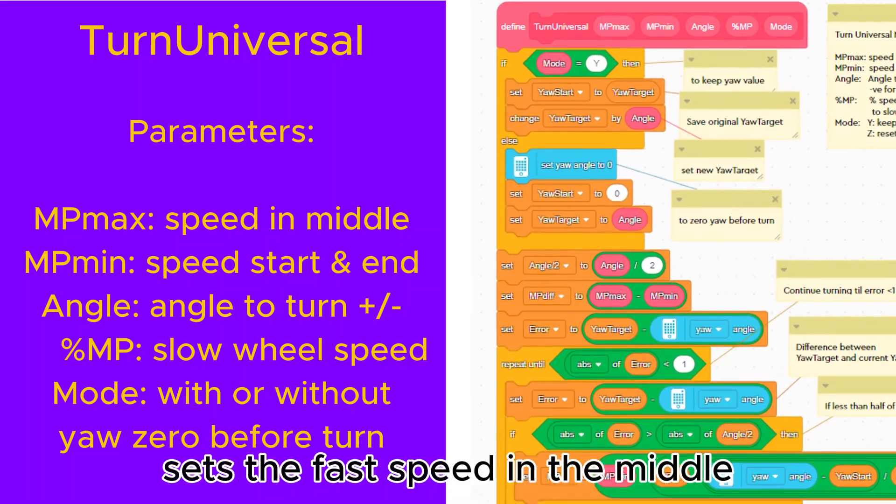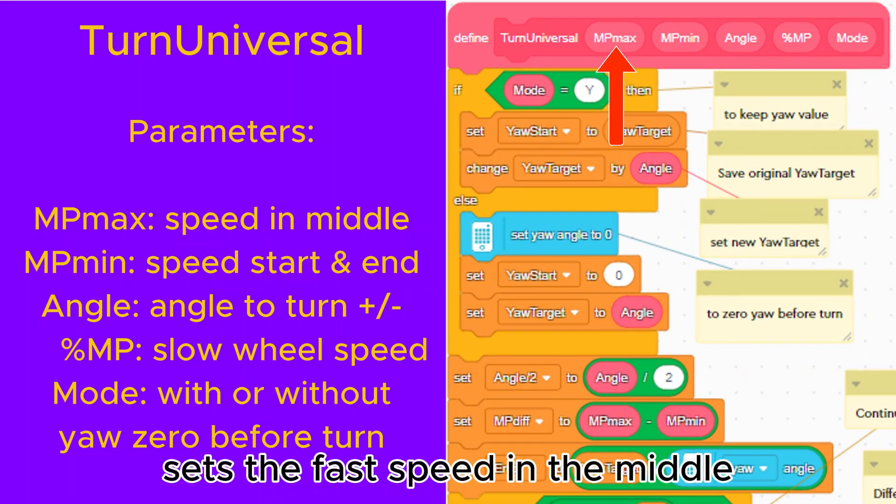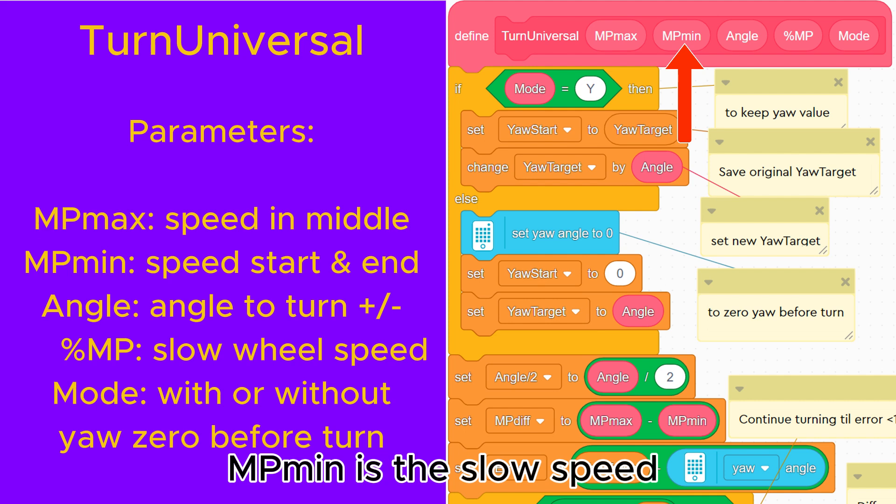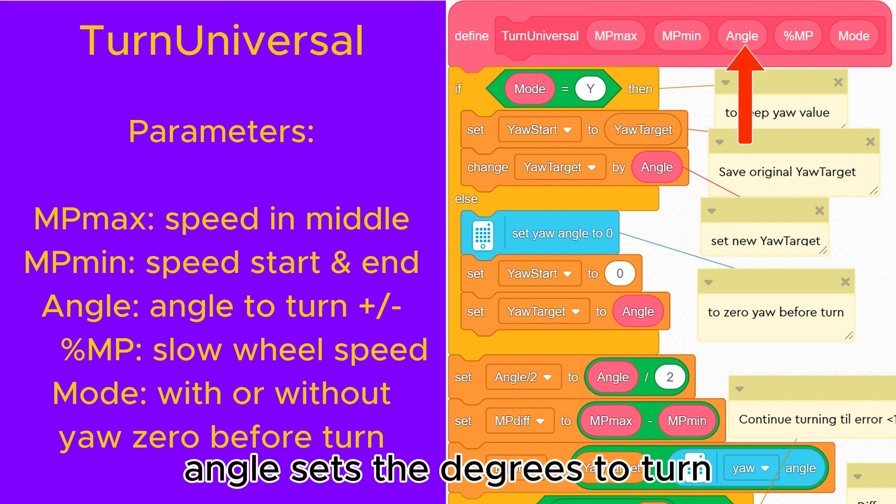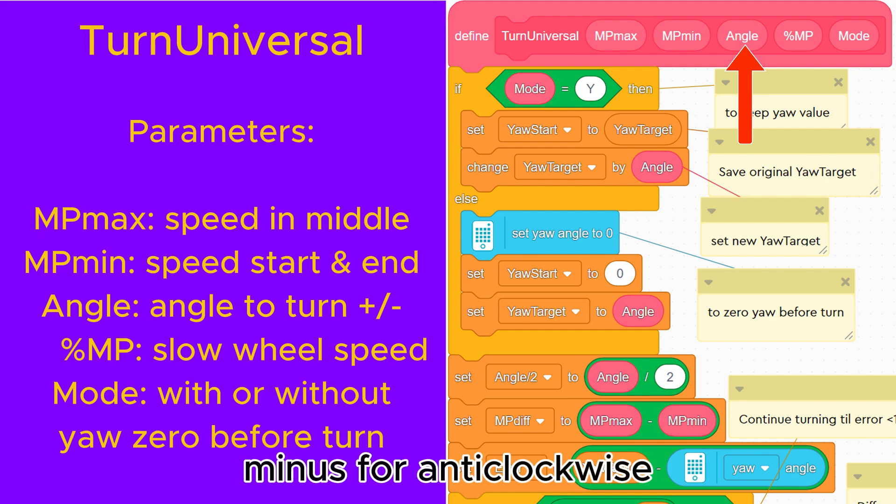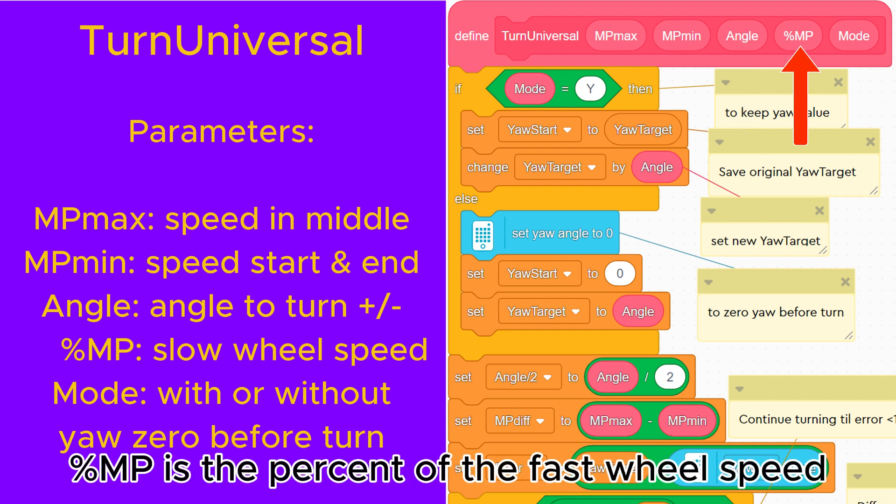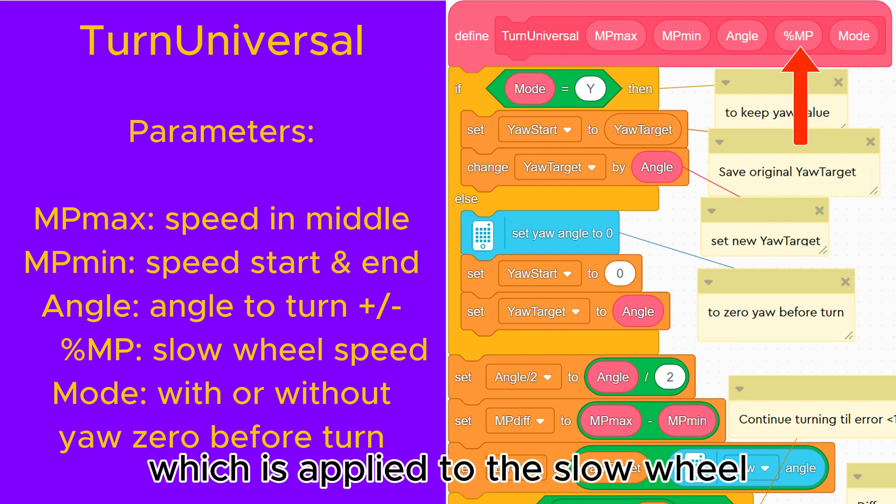The parameter MP max sets the fast speed in the middle. MP min is the slow speed at the start and end. Angle sets the degrees to turn, plus for clockwise, minus for anticlockwise. Percent MP is the percent of the fast wheel speed which is applied to the slow wheel.